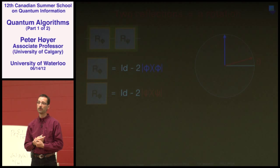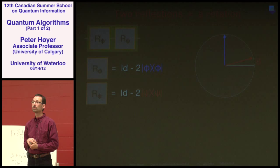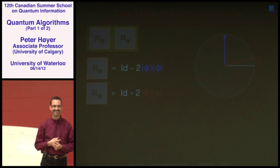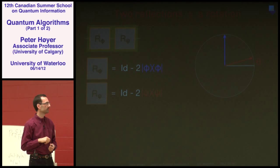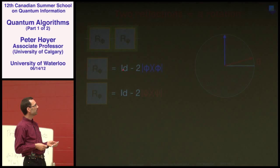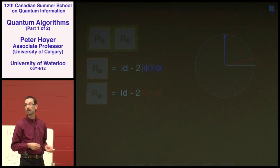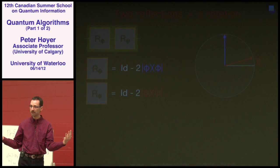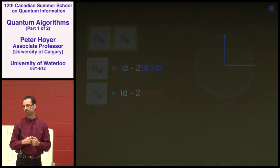Let's analyze the Grover Iterate. Taking two reflections and composing them is very important — in fact one of the only key tricks in quantum computing, alongside the Fourier transform. In general, suppose we have two reflections: R_φ reflects about state φ (taking φ to -φ and everything orthogonal to φ to itself), and R_ψ reflects about state ψ similarly.